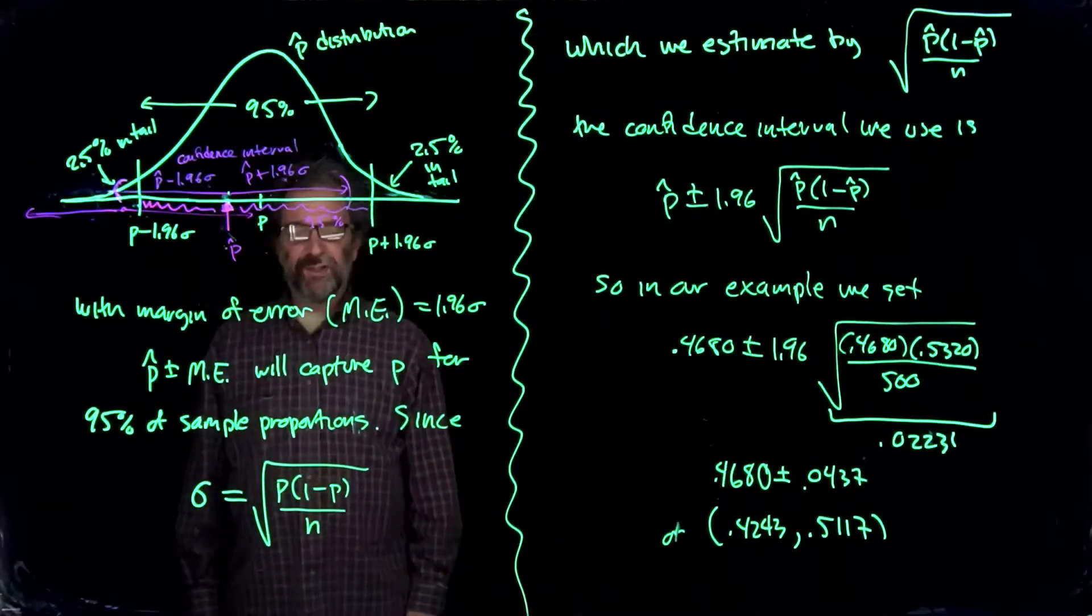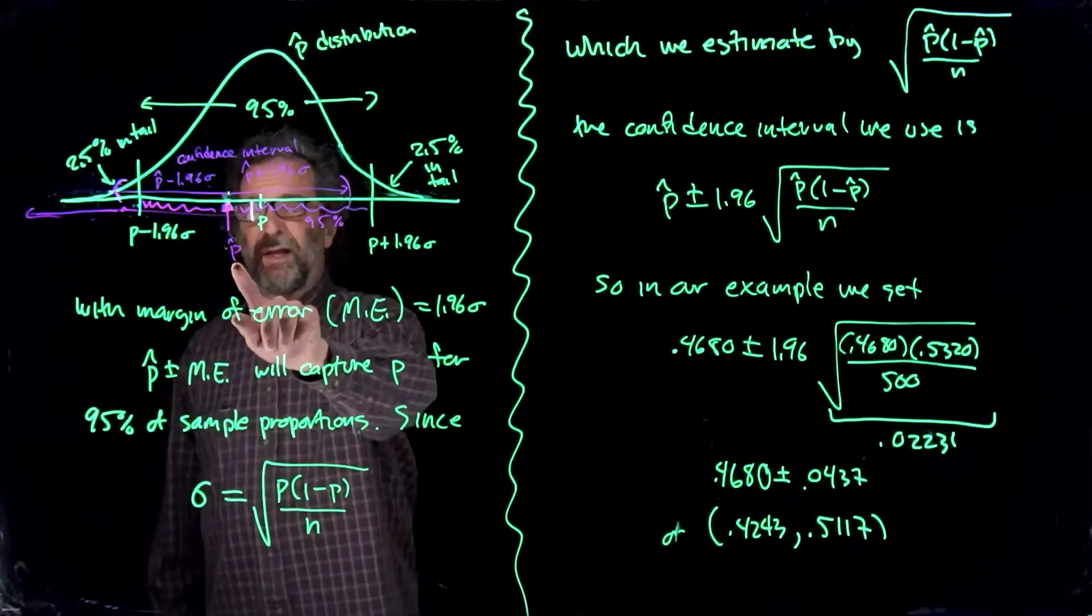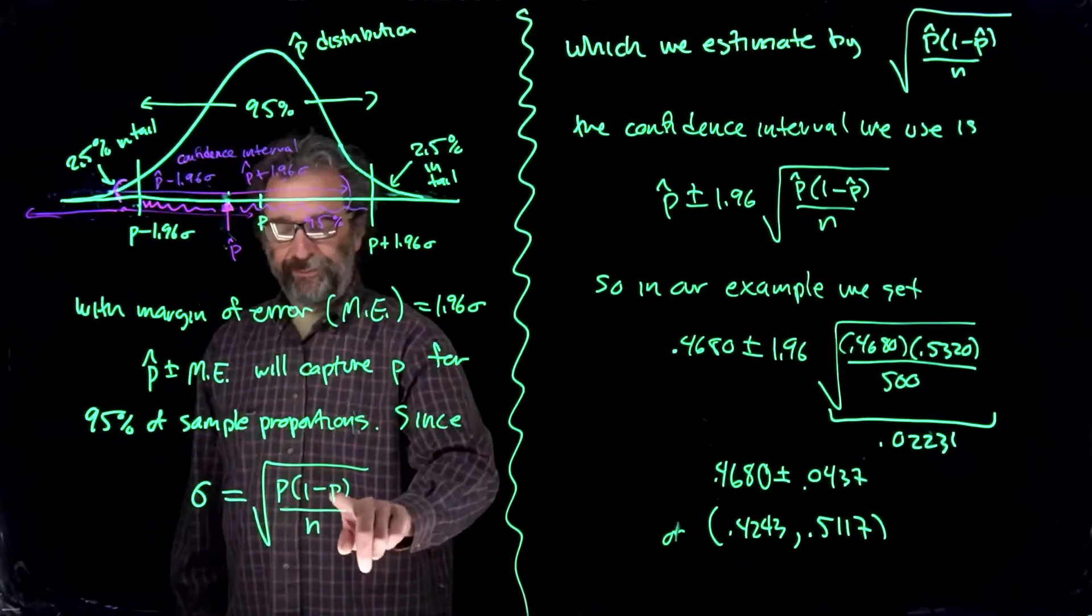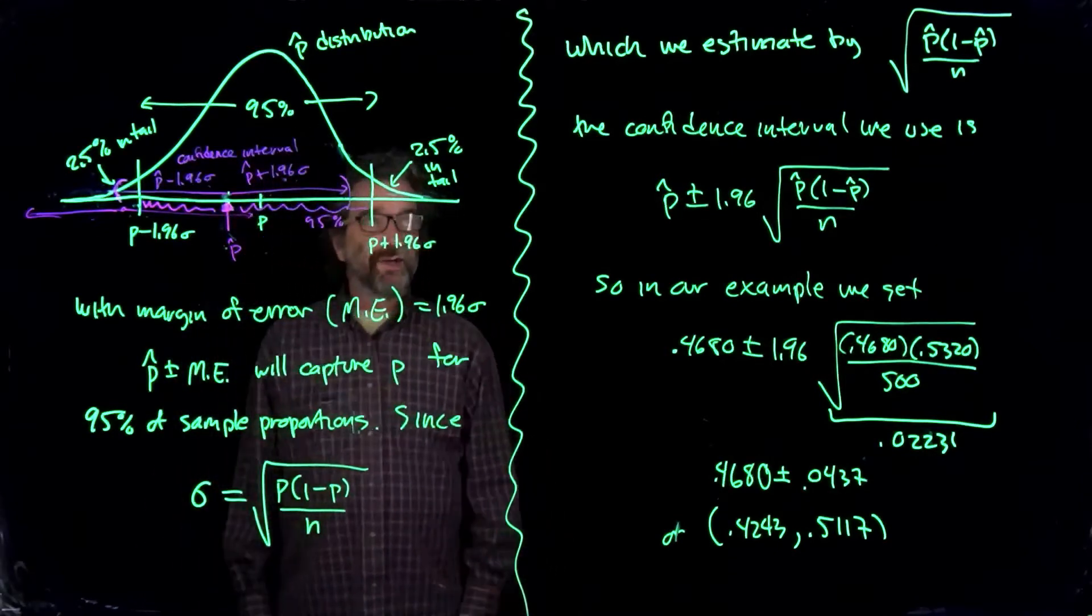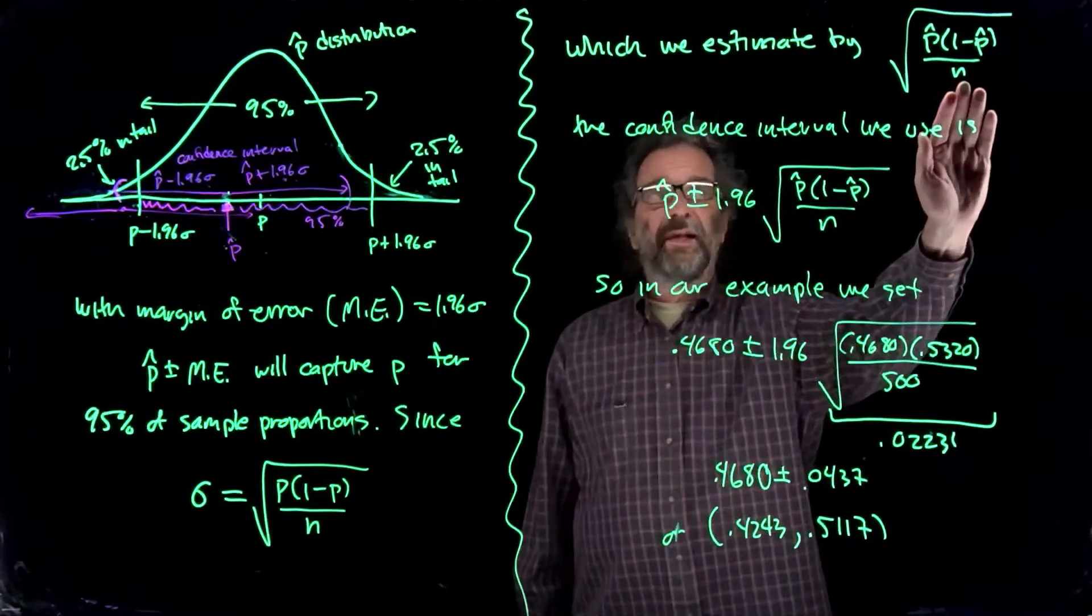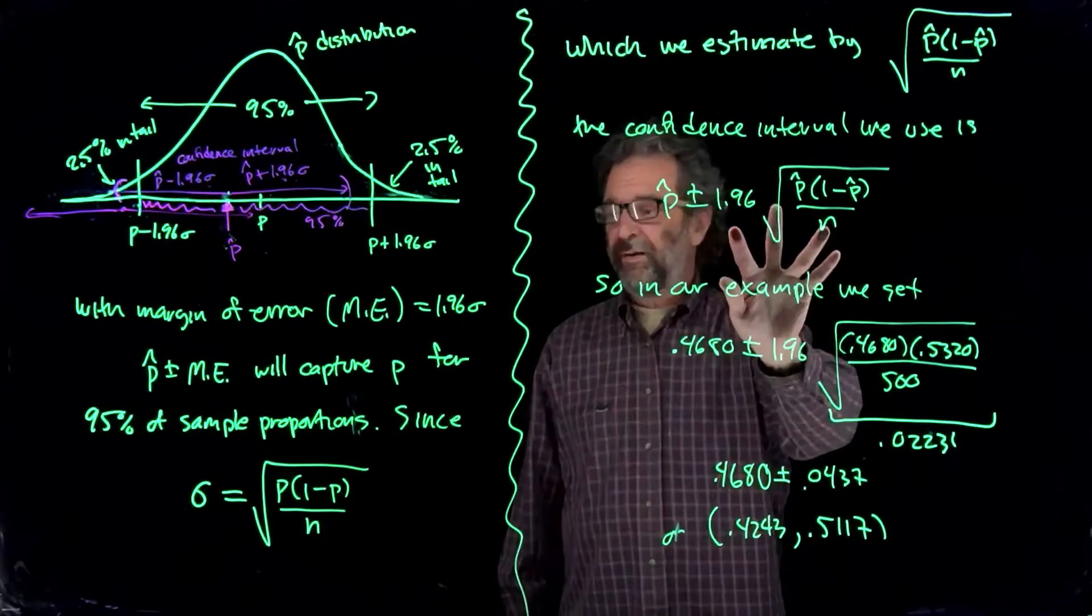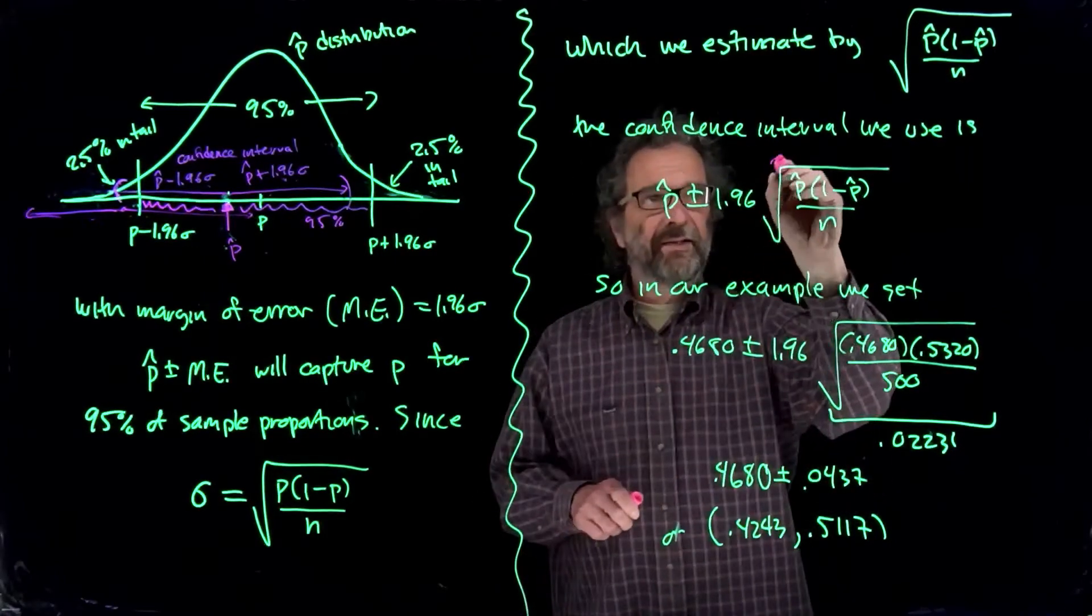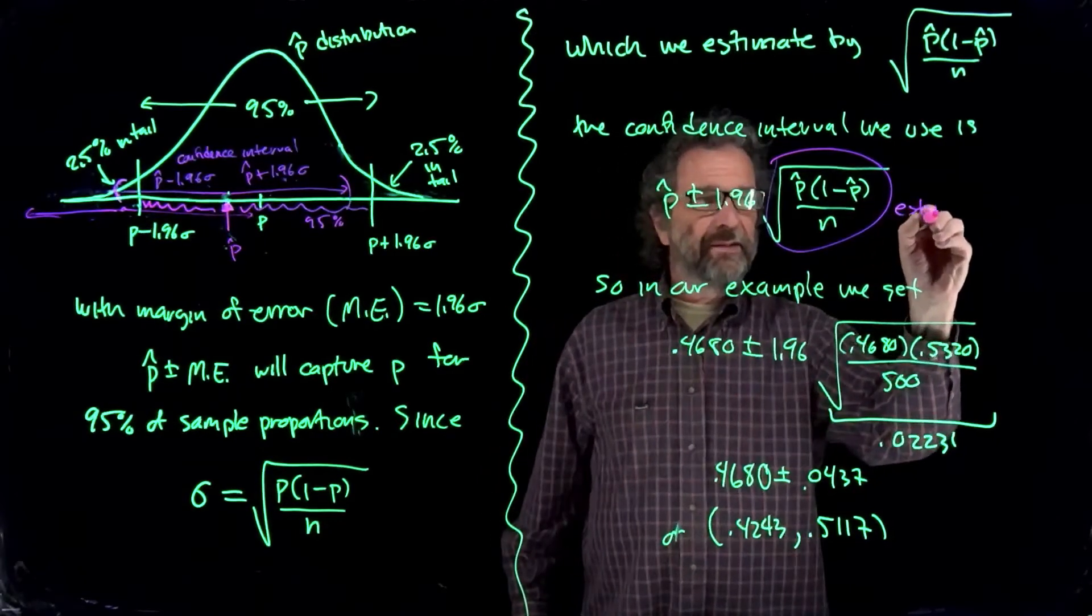Now p is what we'd like to know. We don't actually know it, but we're probably close to it with p hat. So what we'll do is we'll just put p hat in here into the formula, and it will make a slight mistake, but nothing too serious. So we estimate that by that, and then we create the confidence interval, p hat plus or minus the margin of error. It's 1.96 times an estimate, so this is the estimated sigma.